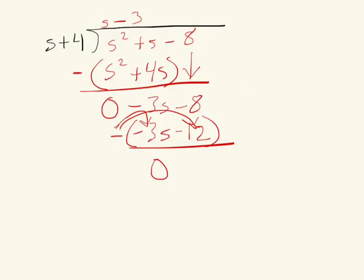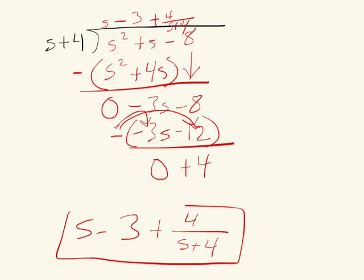Negative 8 plus 12 is going to be 4, and now there's nothing else to bring down. So we're going to say s minus 3 plus 4 all over s plus 4. Write the answer a little bit neater: s minus 3 plus 4 over s plus 4 is going to be your answer.